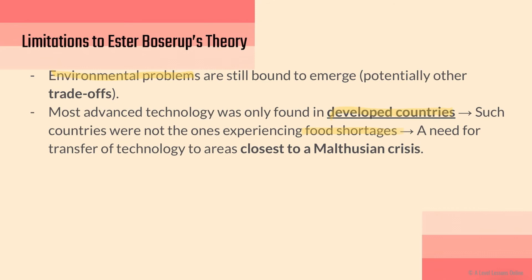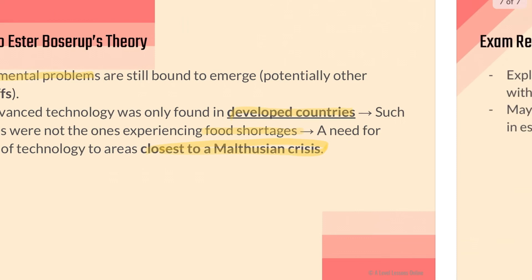There is a need for transfer of technology to areas closest to a Malthusian crisis, particularly less developed countries which may not have access to these crop types or technology to combat food shortages. Population growth in LDCs often runs unchecked because people tend to be less educated in the areas of family planning. This can result in a higher rate of population growth that far exceeds the food supply available, which is why we hear of hunger and poverty in these countries.